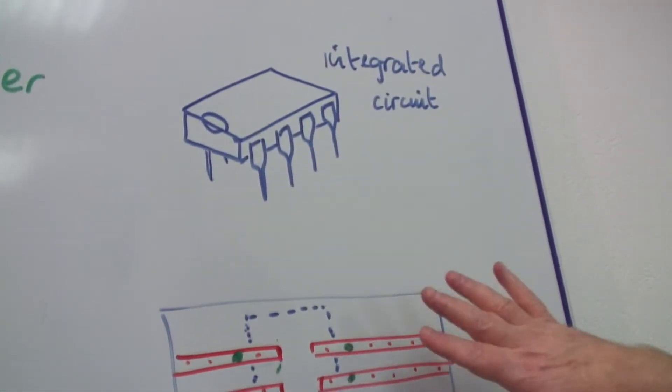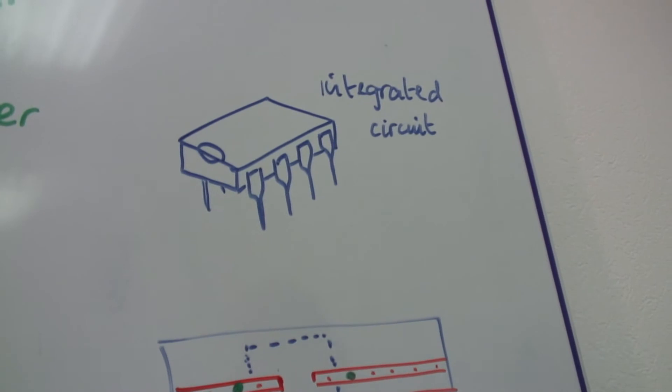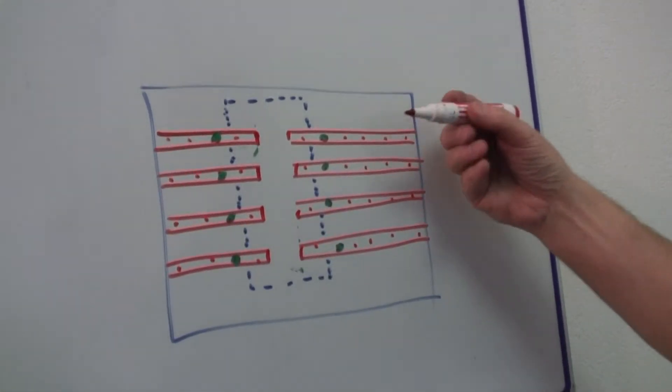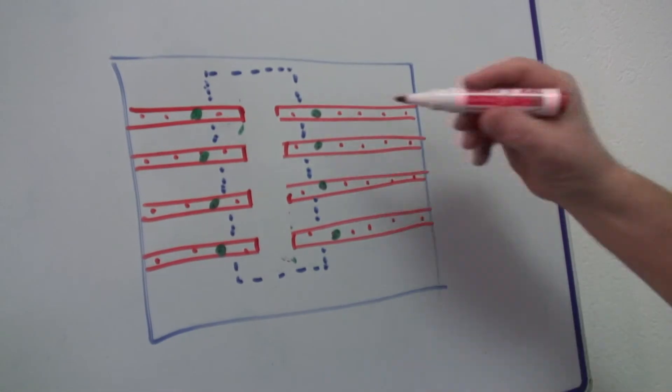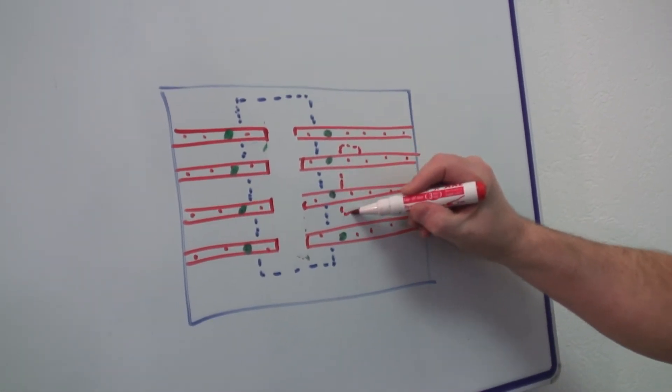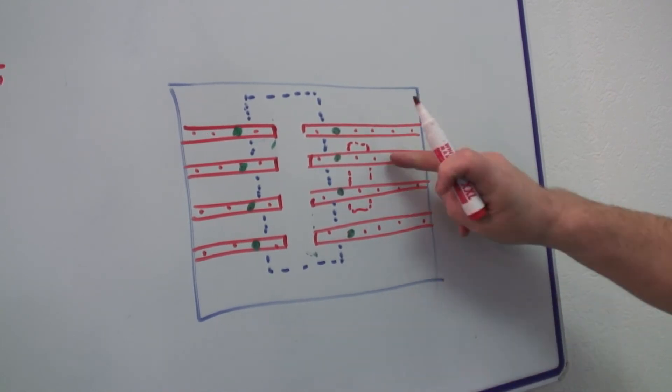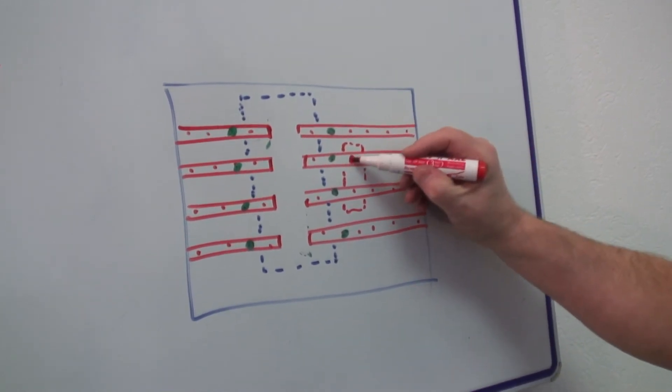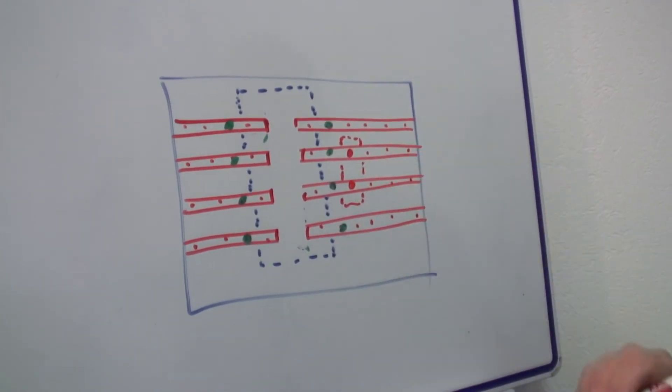Then if we want to put other components on, if I want to add a resistor, I put it on the back. It's behind there. Say, if I want it between here and here, I put the leg through here and here and I solder it.